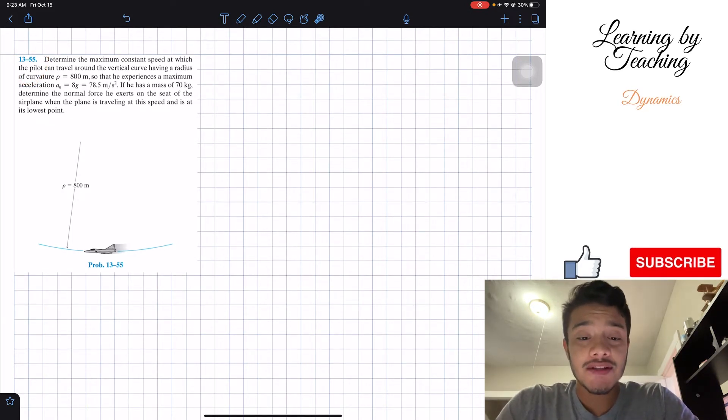It says, determine the maximum constant speed at which the pilot can travel around the vertical curve having a radius of curvature ρ equal to 800 meters, so that he experiences a maximum acceleration an equal to 8g, which is equal to 78.5 meters per second squared.